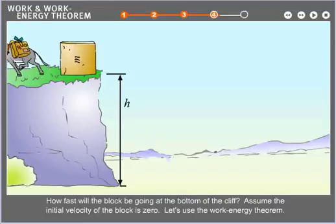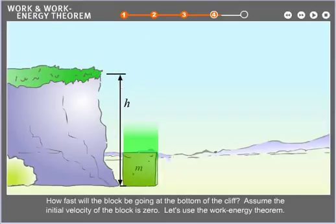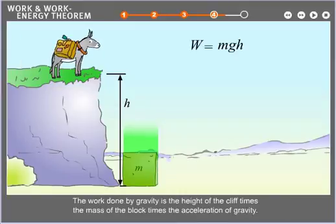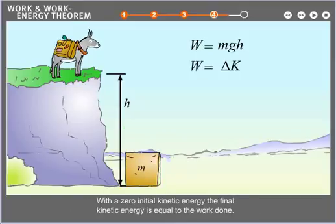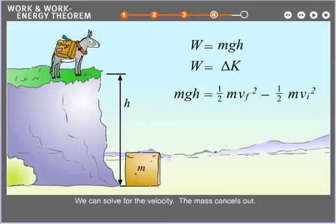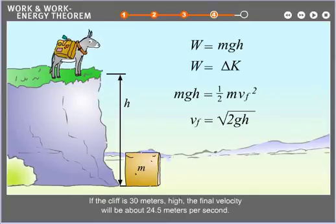How fast will the block be going at the bottom of the cliff? Assume the initial velocity of the block is zero. Let's use the work energy theorem. The work done by gravity is the height of the cliff times the mass of the block times the acceleration of gravity. With a zero initial kinetic energy, the final kinetic energy is equal to the work done. We can solve for the velocity. The mass cancels out. If the cliff is 30 meters high, the final velocity will be about 24.5 meters per second.